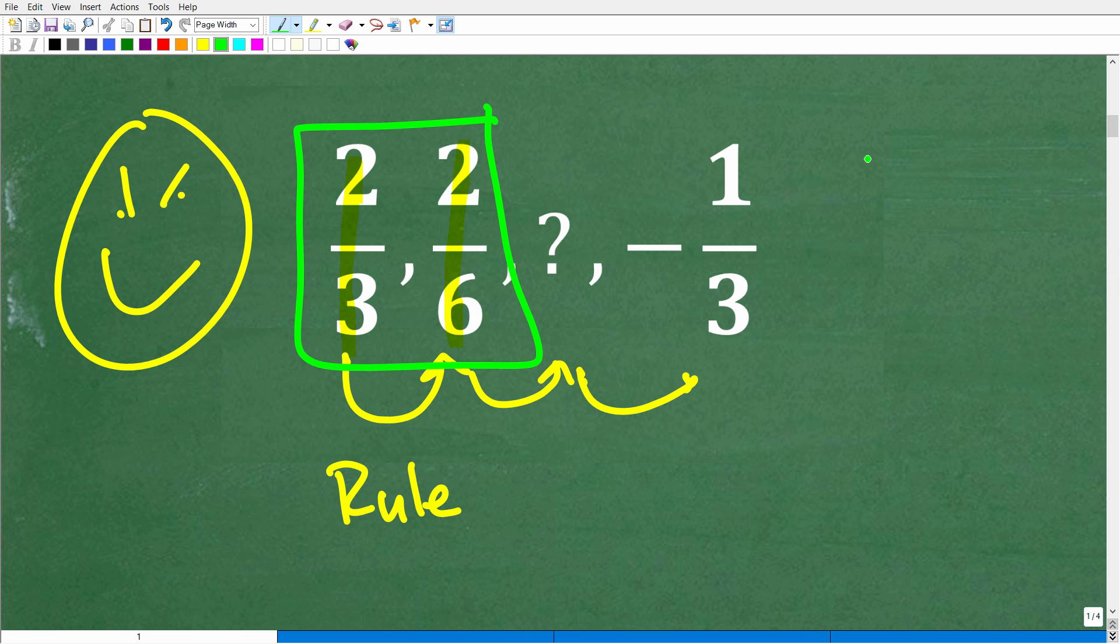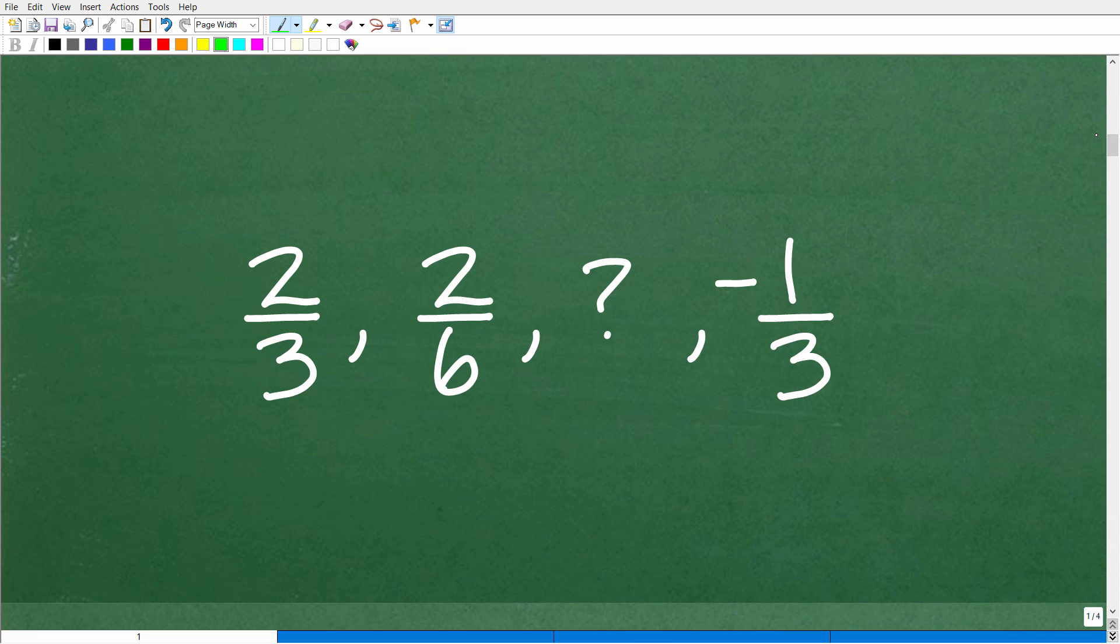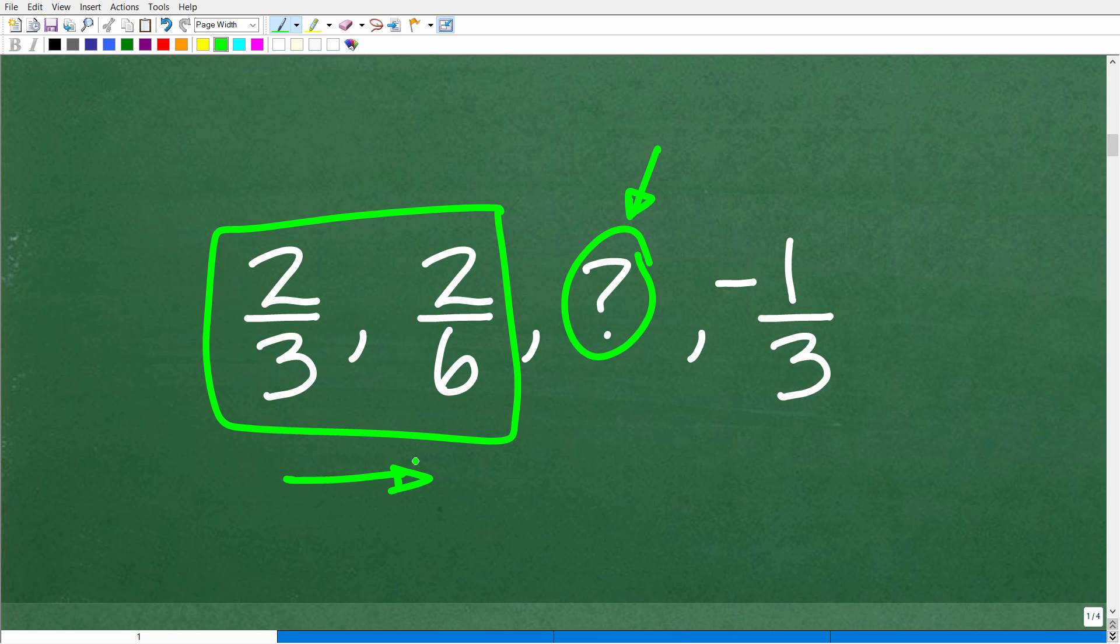So let's go ahead and focus in on how we can go from a two-thirds to a two-sixths. So hopefully I didn't mispronounce anything. But let's go ahead and continue on. So here is our sequence, two-thirds, two-sixths. We're looking for the missing value right here. But we do know that the next or the fourth term in the sequence is negative one-third.